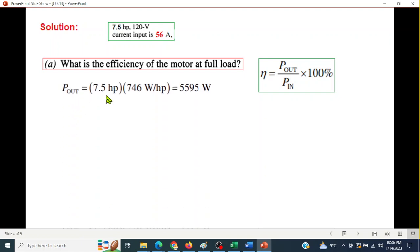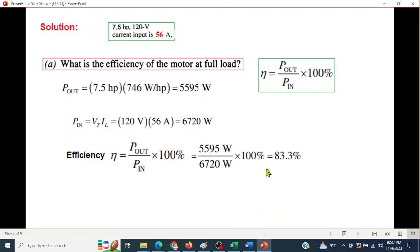P_out we'll find from 7.5 hp. We convert hp into watts by multiplying by 746, so P_out is 5595 watts or 5.595 kilowatts. The input power we'll find from the terminal voltage and the current: P_in is V_t times I_L. Terminal voltage is 120 and the current is 56, so this is our P_in. For the rated current, the efficiency is 83.3 percent. So this was easy.